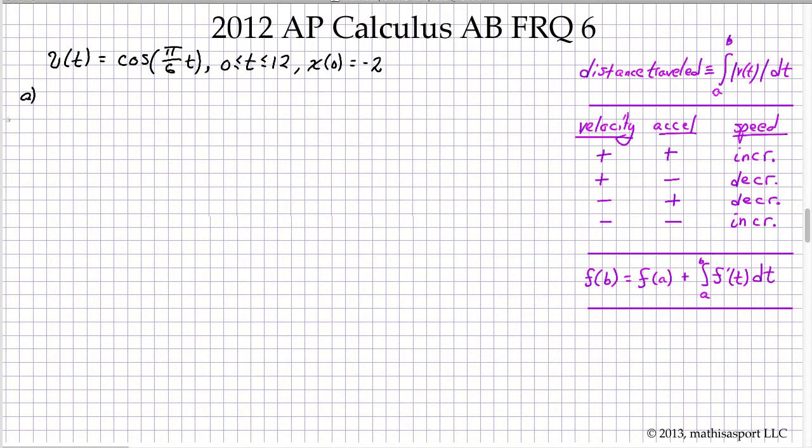So, part A. When is the particle moving to the left? Well, moving to the left, in this case, is the same as v of t being less than 0. And I think graphing this is a good way to get a sense of what's going on. So let's graph v of t.